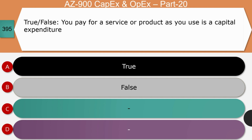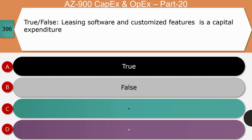True or false: Paying for a service or product as you use it is called capital expenditure. The right answer is false. Pay-as-you-use means the service or product is used by you for a period and there is a cost for that usage. All service costs come under operational expenditure, so the right answer is OpEx — option B.